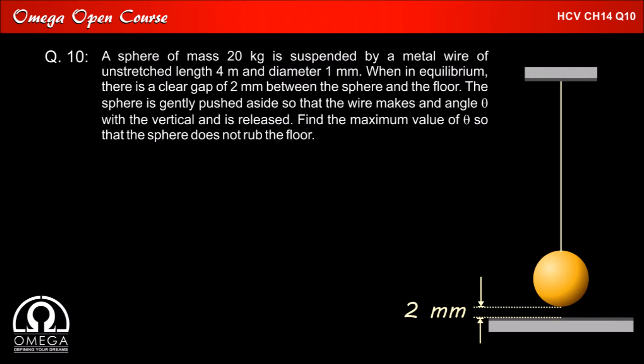Initially when the sphere is in equilibrium there is 2 mm gap with the floor. When the sphere is pulled aside and released the gap no longer remains. That means the wire is elongated by extra 2 mm when the sphere comes moving to the lowest position. Let us calculate this extra strain and the extra stress causing this strain first.